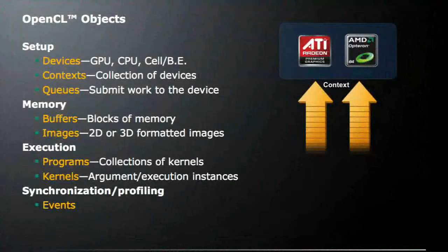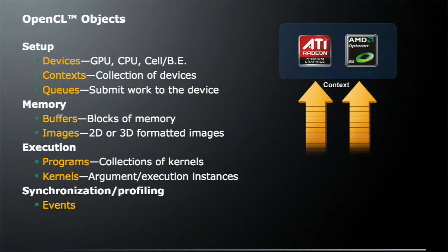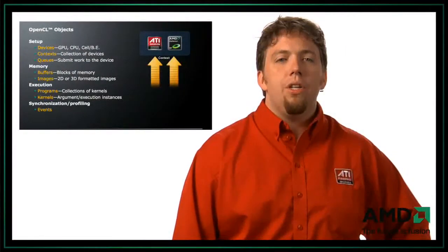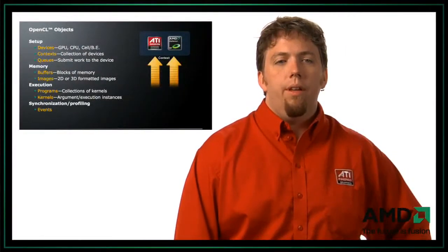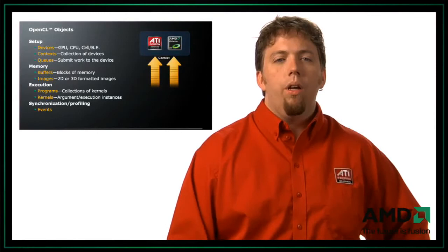Let's talk a little bit about OpenCL objects. There are four basic objects. The first are what I'm going to call setup objects — things such as devices, contexts, and queues. Devices are simply things such as GPUs, CPUs, or other OpenCL devices. A context is a collection of devices. And you have queues — these queues let you submit work to the device.